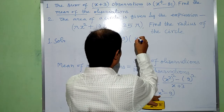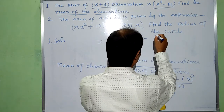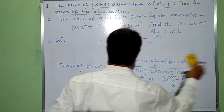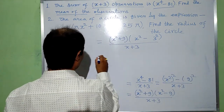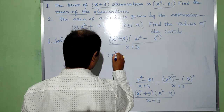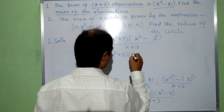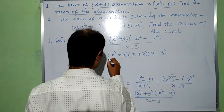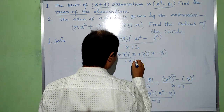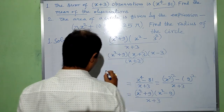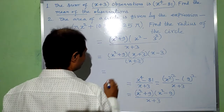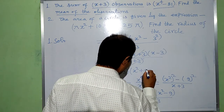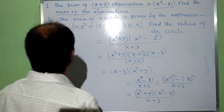We can again write x squared minus 9 as x squared minus 3 squared, which equals x plus 3 into x minus 3. So we have x squared plus 9 into x plus 3 into x minus 3, all divided by x plus 3. The x plus 3 part will be cancelled, and the required mean of the observations is x squared plus 9 into x minus 3.